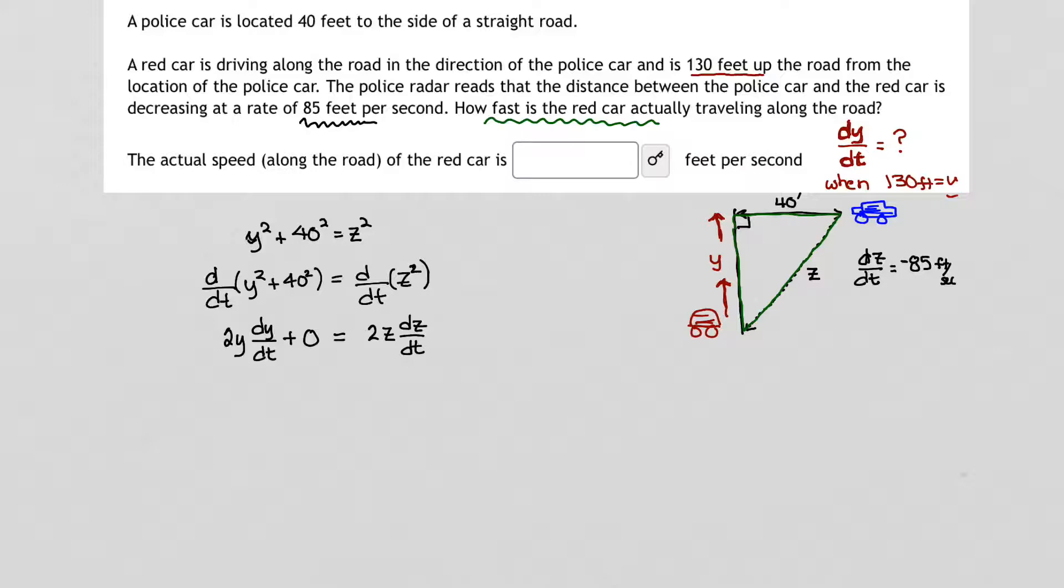It's now time to fill in all the information I have and see what it is that's missing and what I'm trying to solve for. In our problem, we are given that Y is 130 feet, so I have 2 times 130 feet. dy/dt is what we're searching for. On the other side, I have 2 times, I'm not given Z, am I? But I am given dz/dt, which is negative 85. It seems to me that in order to solve for dy/dt, I have to do one more step, and that is I have to figure out what the variable Z is at the instant when Y is 130.